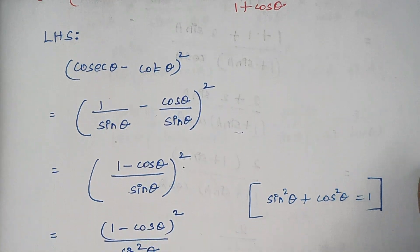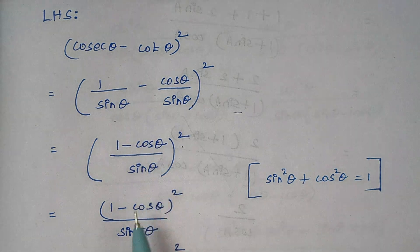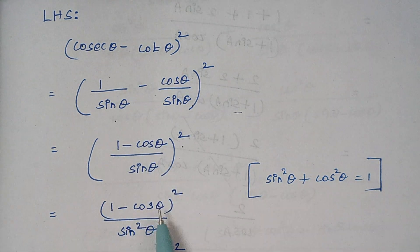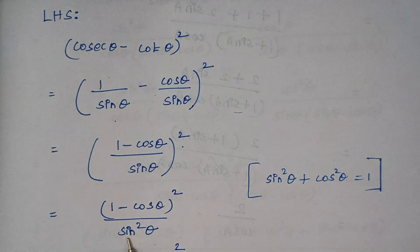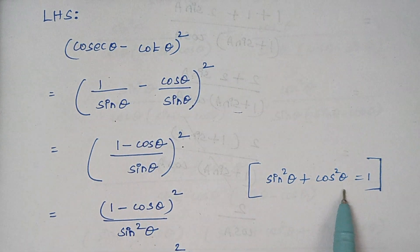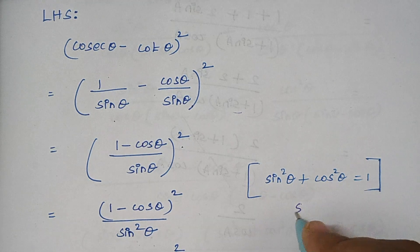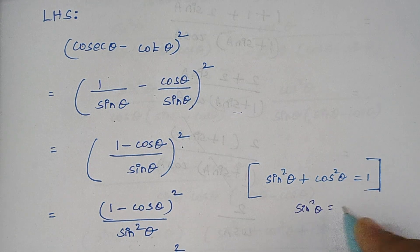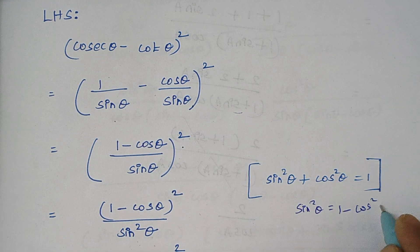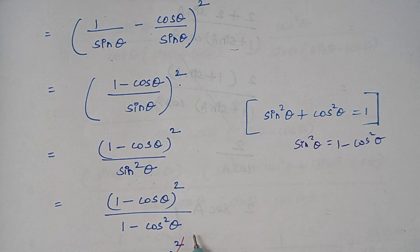Now I am splitting this square for numerator and denominator. Therefore this becomes 1 minus cos theta the whole square, divided by sin square theta. As per the identity, sin square theta plus cos square theta equals 1, so sin square theta can be written as 1 minus cos square theta. So we replace sin square theta by 1 minus cos square theta.